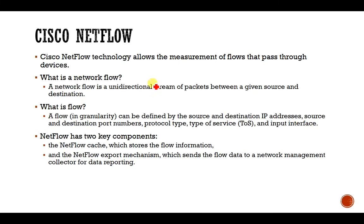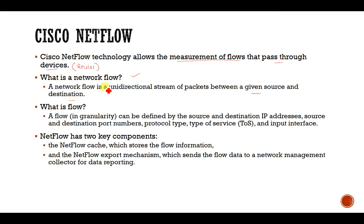Cisco NetFlow is a technology that allows the measurement of flow that passes through a device — here, a device means a router, maybe a Cisco router. So it will measure the flow of data along the router. A network flow is a unidirectional stream of packets between a given source and a destination. For example, data coming from an outside network into your home network constitutes a network flow.